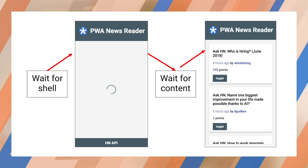Loading will look like this. First, there'll be a delay for the initial HTML shell. The shell will appear with a loading symbol, such as a spinner, and make requests for content. Next, there'll be another delay while waiting for content. And then finally, the content will arrive and fill out the shell.